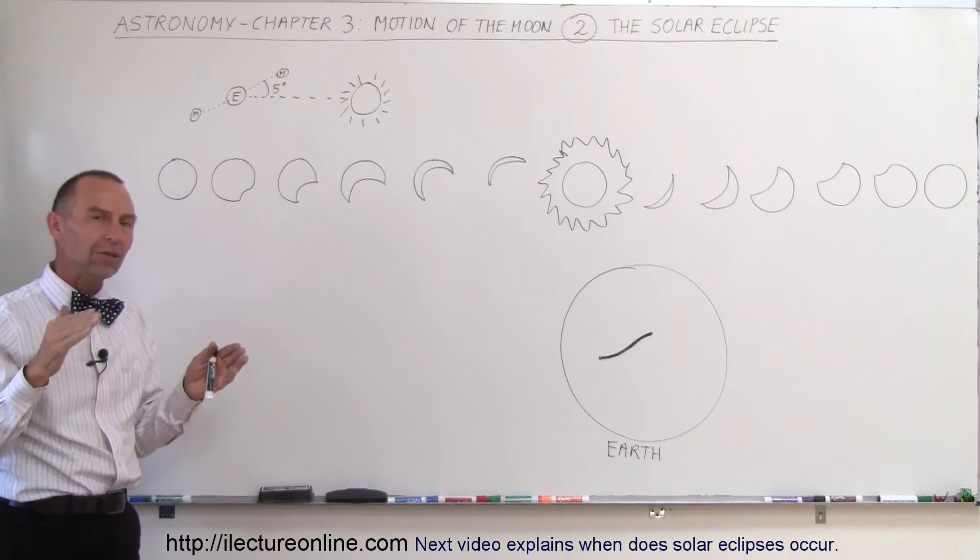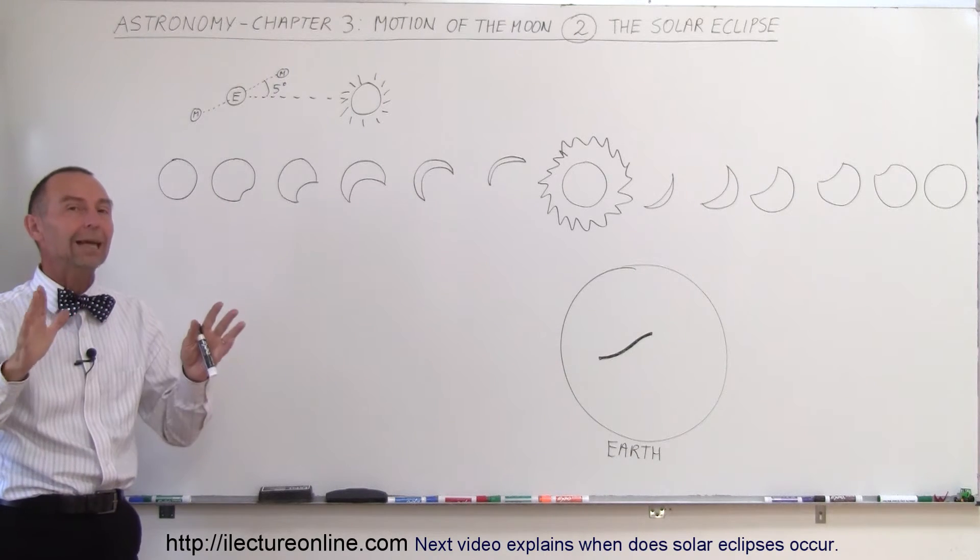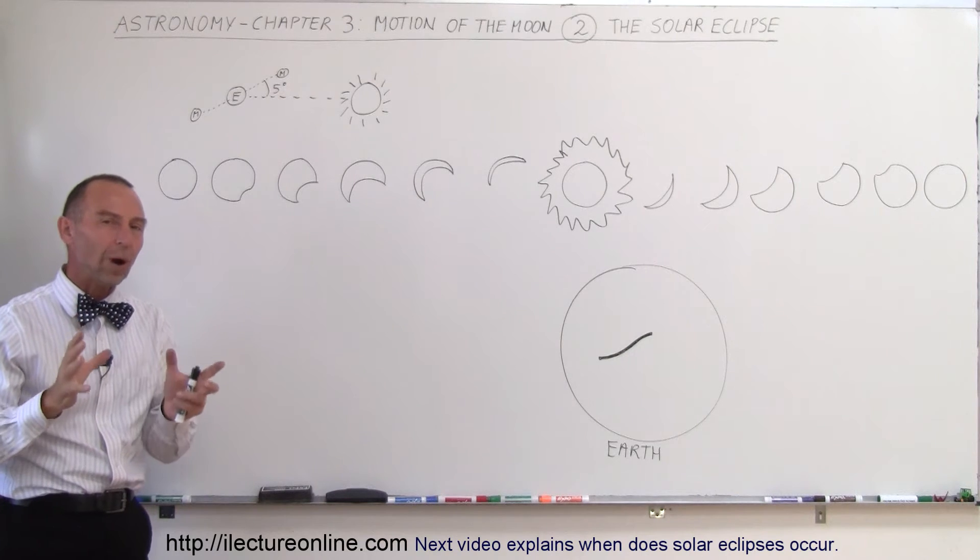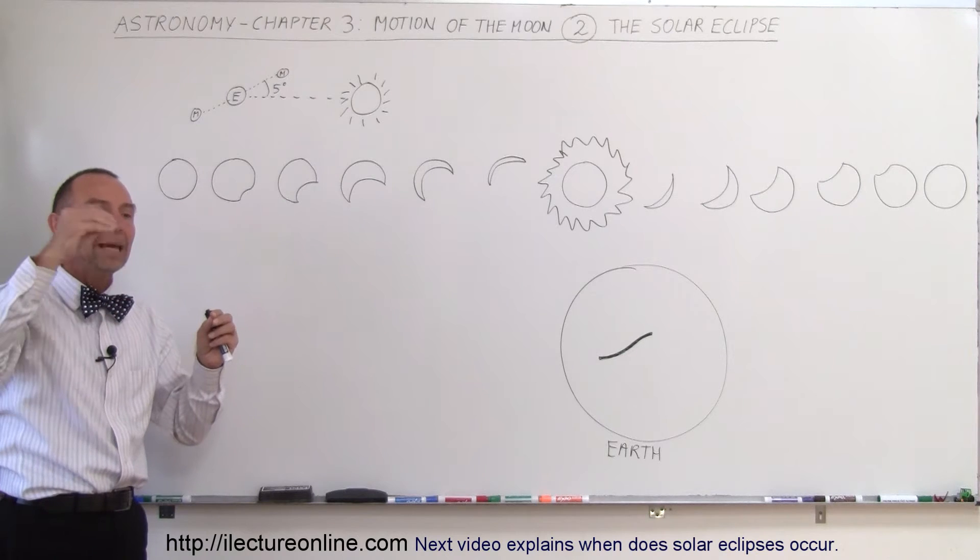But most of the time when it does that, it will be on the ecliptic plane, not in a position between the Earth and the Sun, therefore not able to block out the light. But once in a while, on average about twice a year, it will happen as the Moon goes into the ecliptic plane.